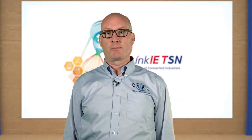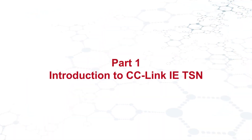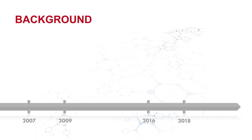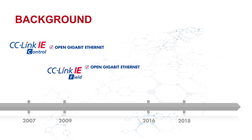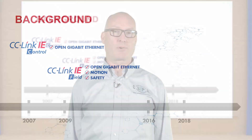Let's start out with a little bit of background about where CC-Link IE-TSN came from. The CC-Link Partner Association was the first open network association to introduce open gigabit Ethernet for automation. This was with CC-Link IE-Control back in 2007. CC-Link IE-Control was intended as a high-speed backbone network to link different controllers together on the shop floor. We followed that with CC-Link IE-Field, which extended the gigabit Ethernet from the controllers to field devices and also introduced motion and safety control on the same network.